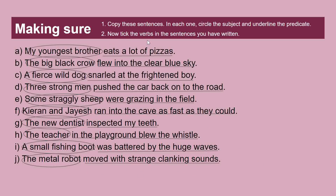Now the second part: we have to tick the verbs in the sentences. Sentence A: 'My youngest brother eats a lot of pizzas' — verb: 'eats.' B: 'The big black crow flew into the clear blue sky' — verb: 'flew.' C: 'A fierce wild dog snarled at the frightened boy' — verb: 'snarled.' D: 'Three strong men pushed the car back onto the road' — verb: 'pushed.' E: 'Some straggly sheep were grazing in the field' — verb: 'grazing,' which means eating grass. F: 'Kiran and Jayesh ran into the cave as fast as they could' — verb: 'ran.' G: 'The new dentist inspected my teeth' — verb: 'inspected.' H: 'The teacher in the playground blew the whistle' — verb: 'blew.'